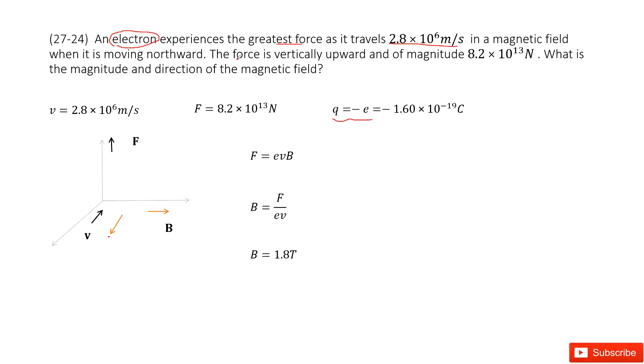The next one tells us this greatest force is upward. The magnitude is given. So the force is upward. The magnetic field—it's going to ask you what is the magnitude and direction for this magnetic field. This is easy.